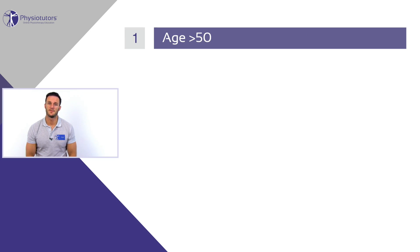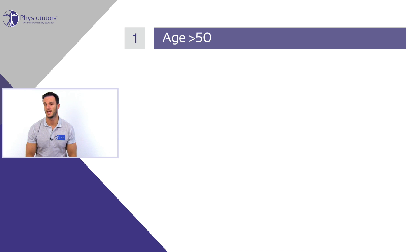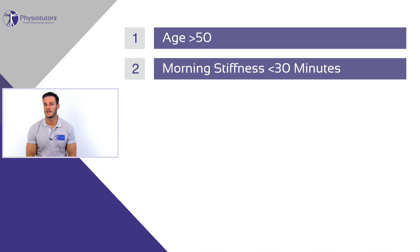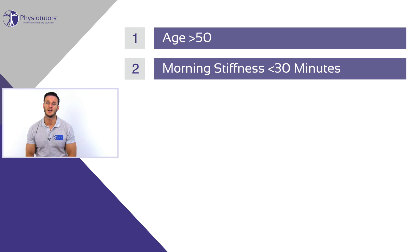1. Age older than 50 years, due to the fact that the prevalence increases with increasing age with a peak around 78 to 79 years. 2. Morning stiffness of less than 30 minutes, which is an important factor to distinguish osteoarthritis from rheumatoid arthritis, in which case stiffness is usually lasting longer than 30 minutes.